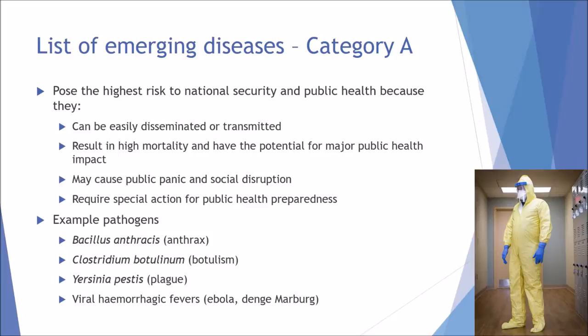Examples of category A pathogens include Bacillus anthracis, the bacterium causing anthrax; Clostridium botulinum, which causes botulism; Yersinia pestis, which causes plague — responsible for the biggest outbreak during the Black Death period — and also viral haemorrhagic fevers including Ebola, dengue, and Marburg.